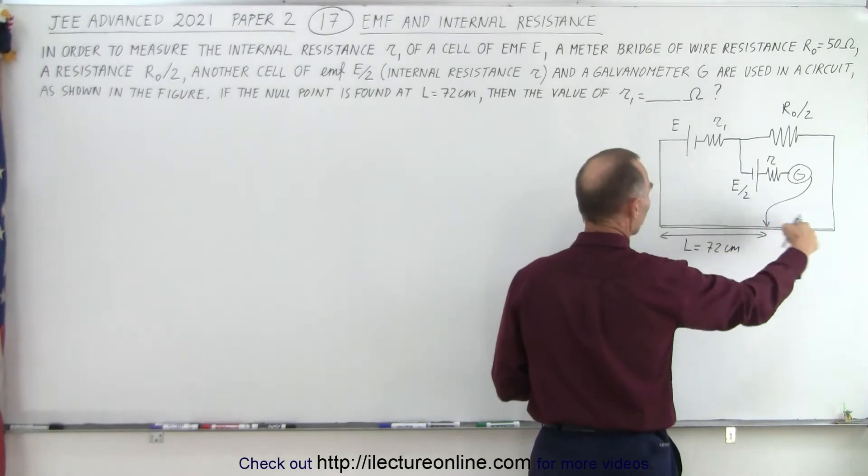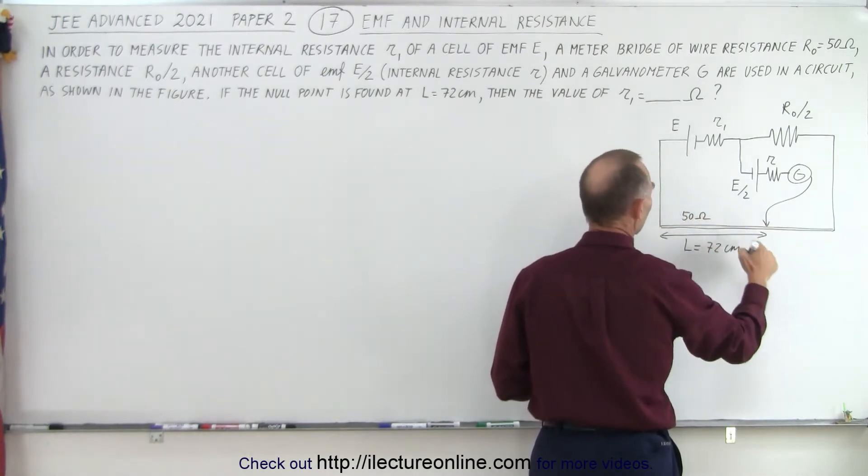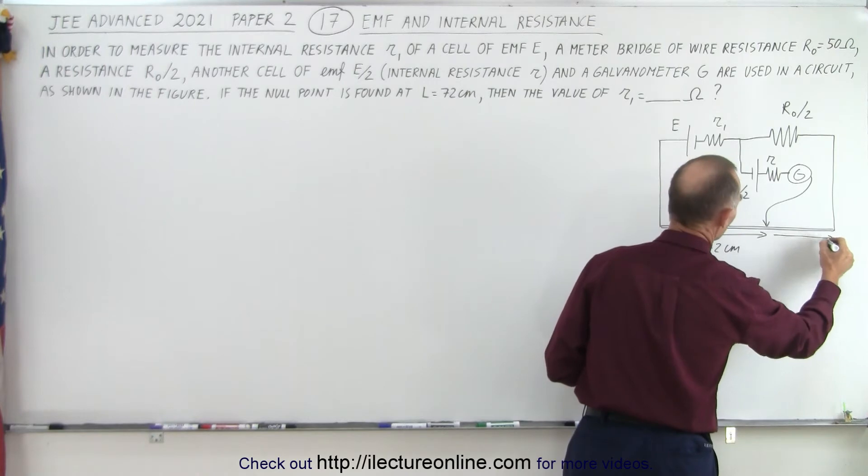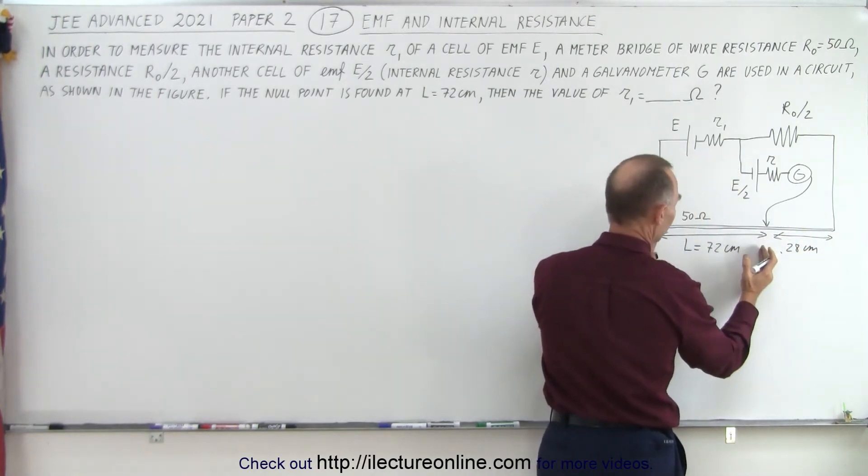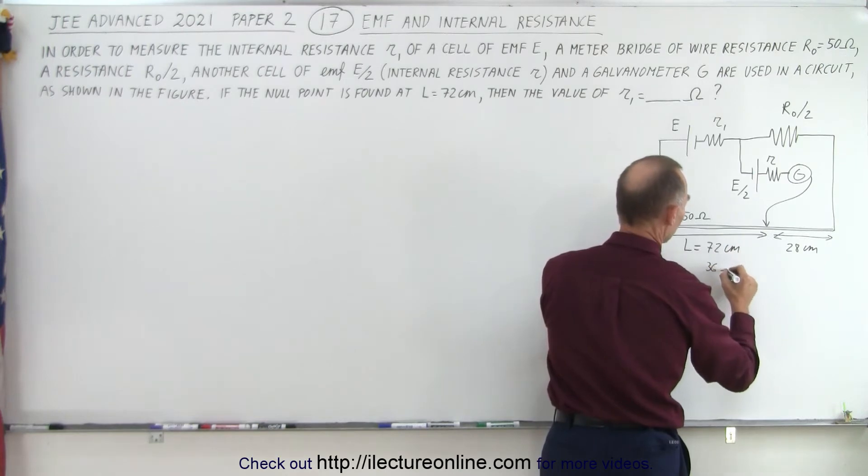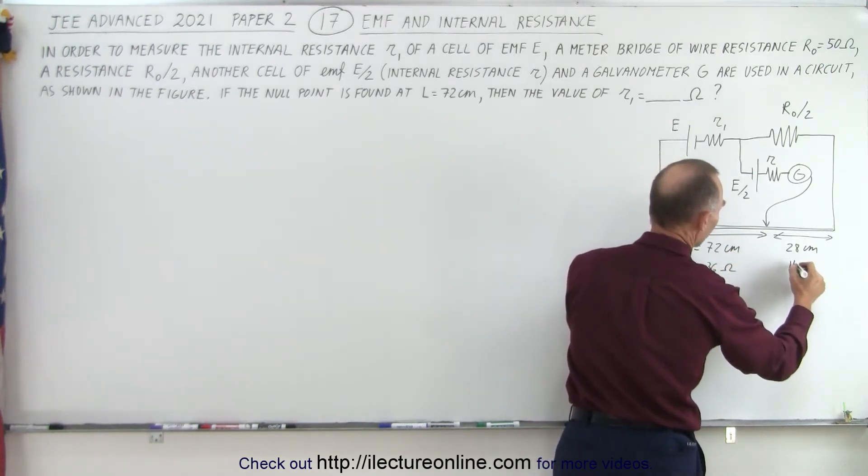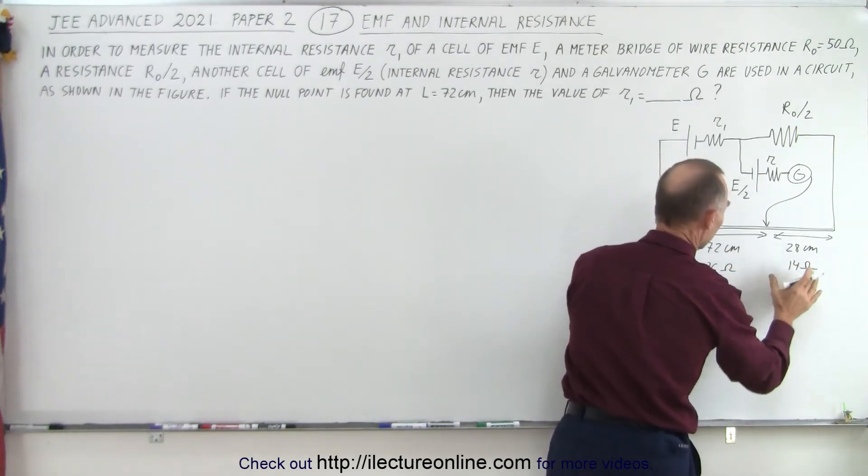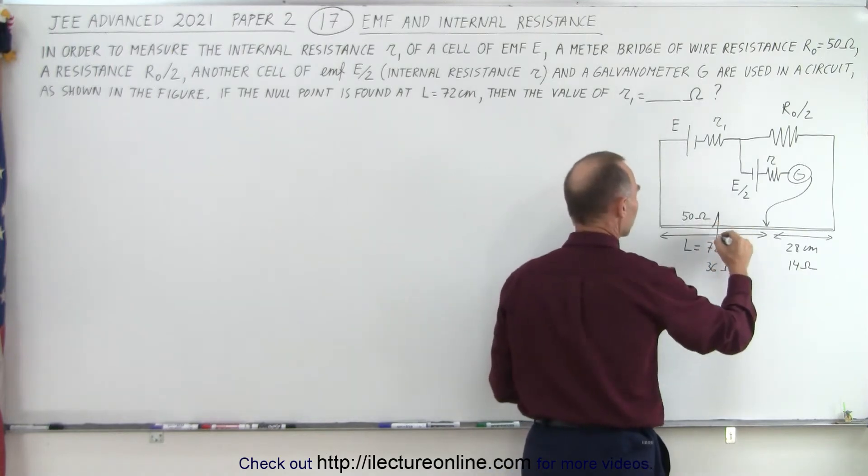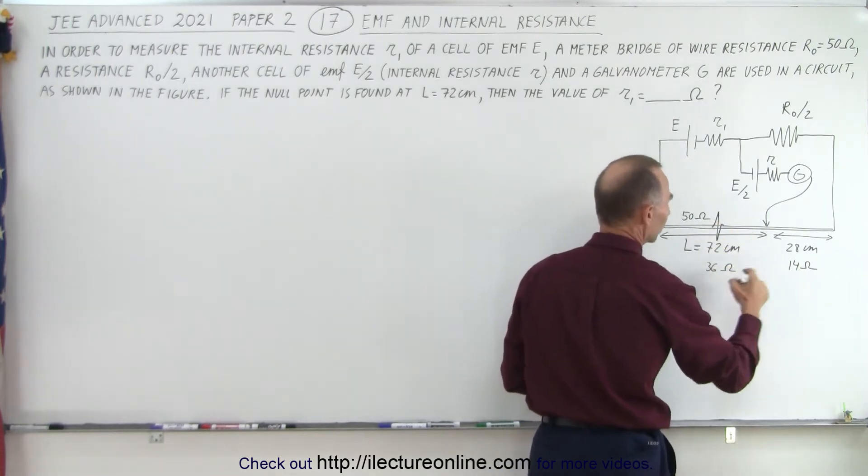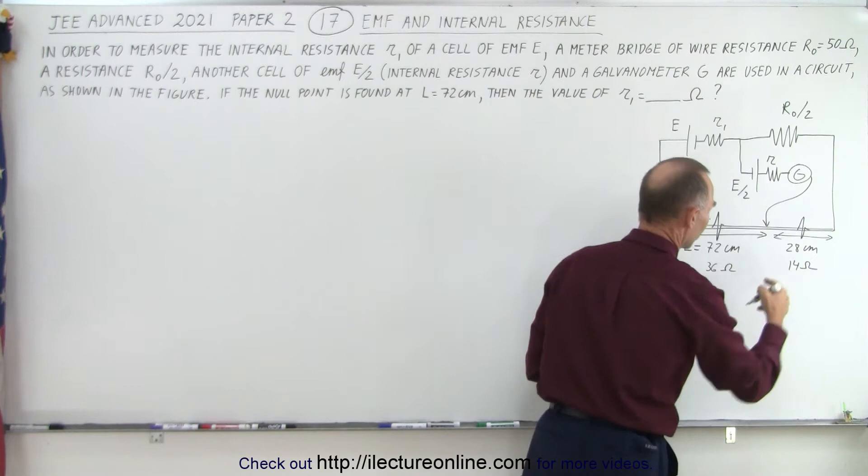This whole thing has a resistance of 50 ohms. That means this section here is 28 centimeters, which means the resistance of this is 36 ohms and the resistance of this is 14 ohms. Looking at it that way makes it a lot easier. Think of this as a resistor of 36 ohms and this as a resistor of 14 ohms.